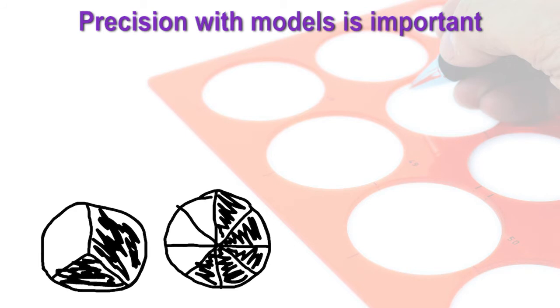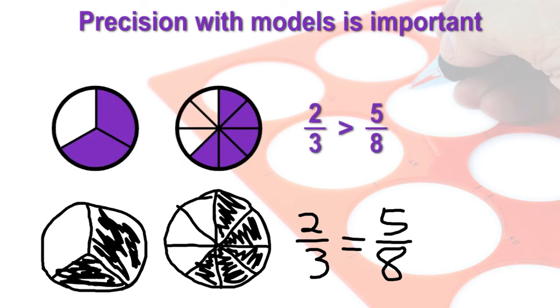When inaccurate models are drawn, such as this one, it is possible to think two-thirds is equal to five-eighths, when in fact it is greater than five-eighths. Models are a great way to justify students' thinking, not the other way around.